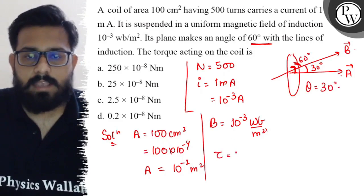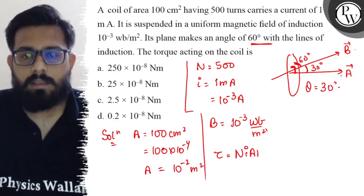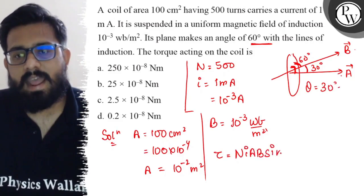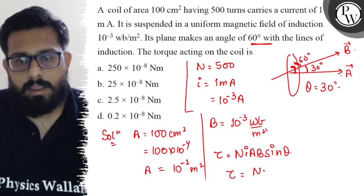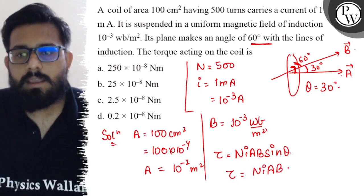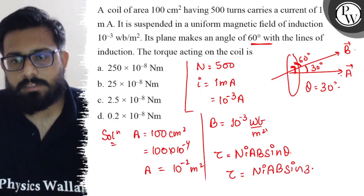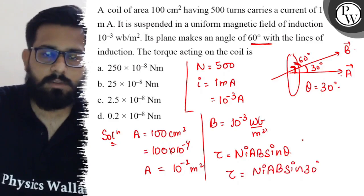And τ can be written as NIABsinθ, where theta is the angle between area vector and the magnetic field. So τ can be written as NIABsin30°. Sin 30 degrees is 1 by 2. So let us solve this on the next page.